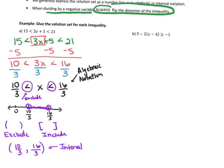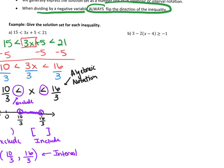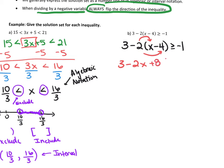For the other problem, notice that we have a little more math that has to occur first. In order to solve any inequality like this, we're always going to first distribute when necessary. So we distribute this out: this is 3 minus 2 times X. Distributing the negative 2, I get 3 minus 2X plus 8, which is greater than or equal to negative 1. Combining like terms, I get negative 2X plus 11 is greater than or equal to negative 1.